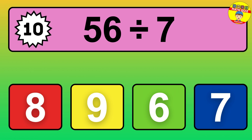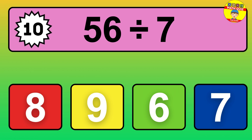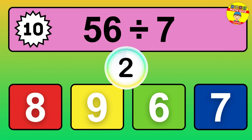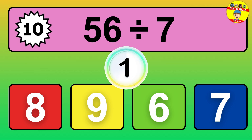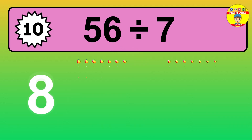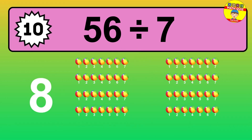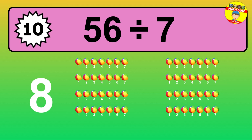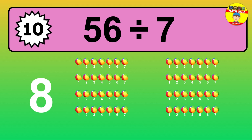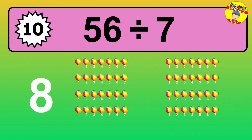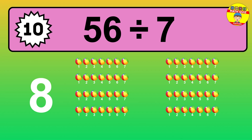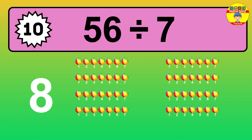56 divided by 7 — time to think! Let's go to the solution. Divide the number 56 by 7. Each group contains 7 units, so dividing 56 by 7 results in 8 equal groups. Thus, the result is 56 divided by 7 equals 8.